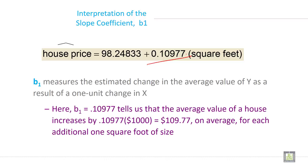b1 measures the estimated change in the average value of Y as a result of a one-unit change in X.